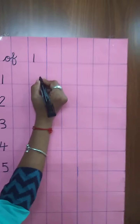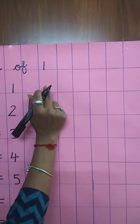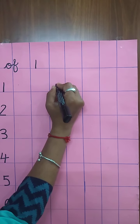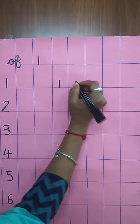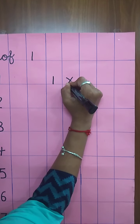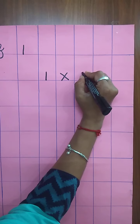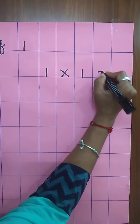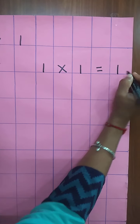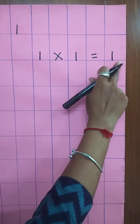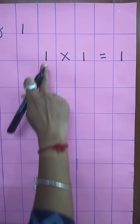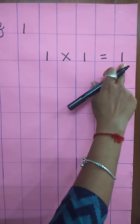Leave the two boxes. Write here again. Write down one. Equal, multiplying sign. Write down one. Equal sign. Again, write down one. One ones are one. Touch the line and write. One ones are one.